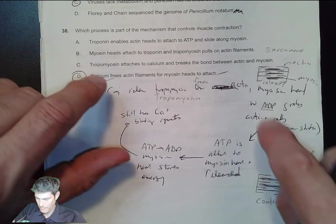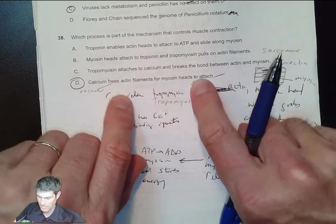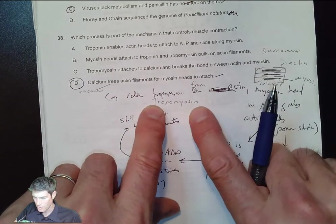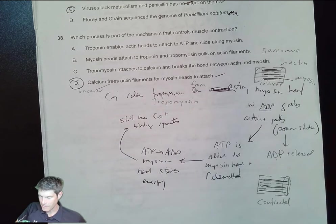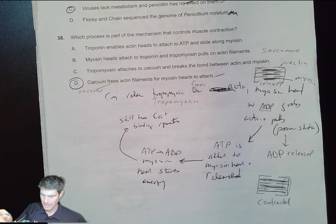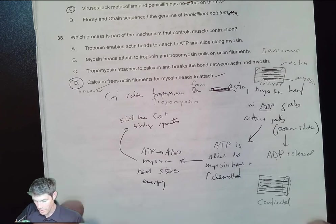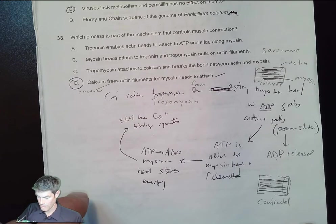Controlling muscle contraction: calcium frees the actin filaments and myosin heads to attach. Remember, it shifts the tropomyosin off those myosin heads - sorry, off the actin - so myosin heads can join and then create that sliding action that creates muscle contraction and movement.